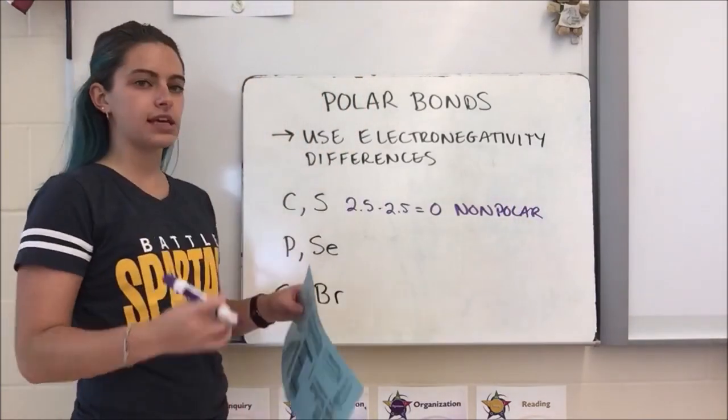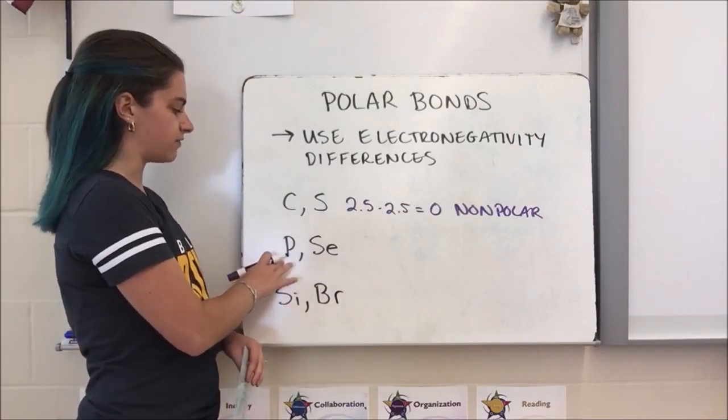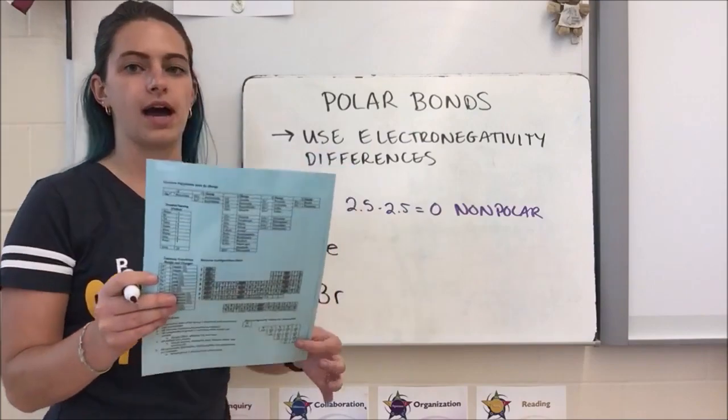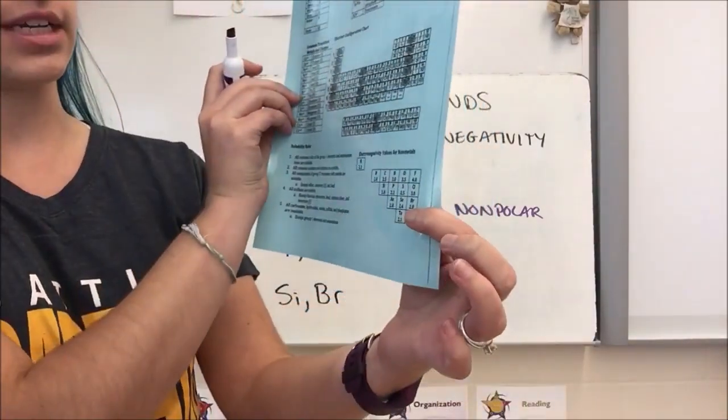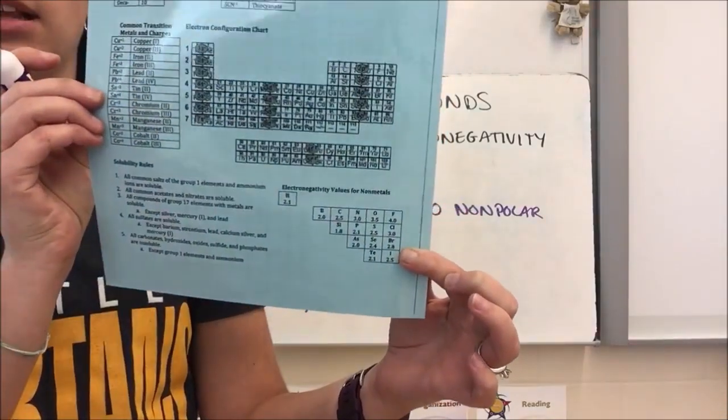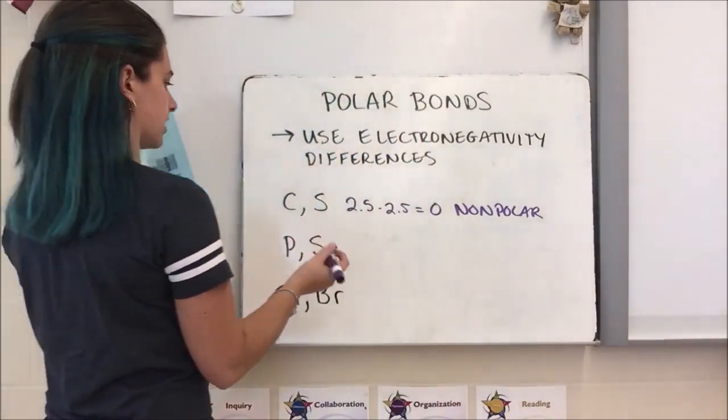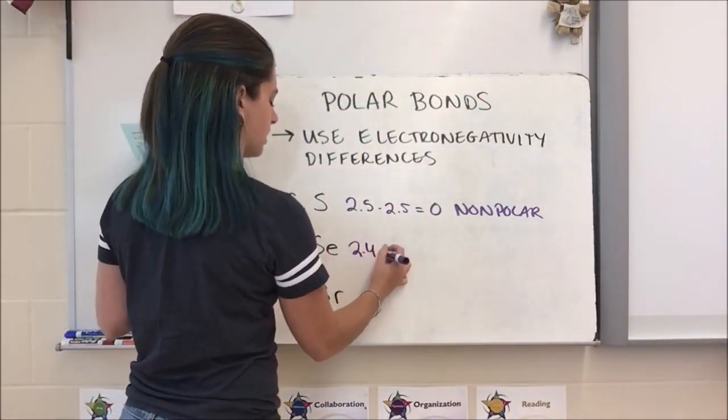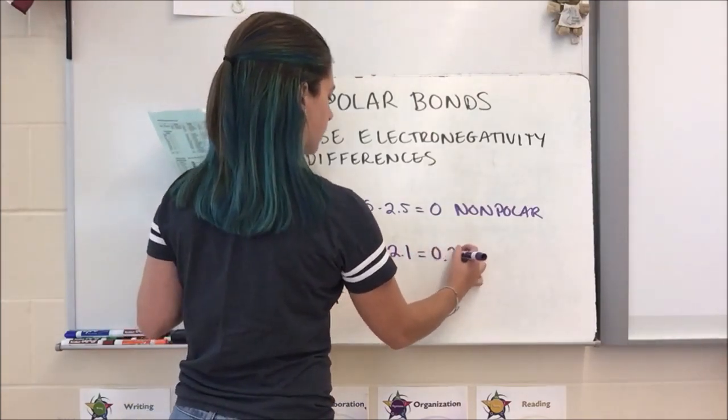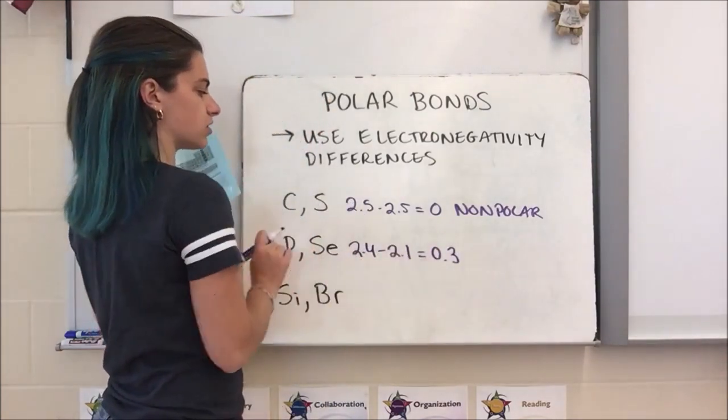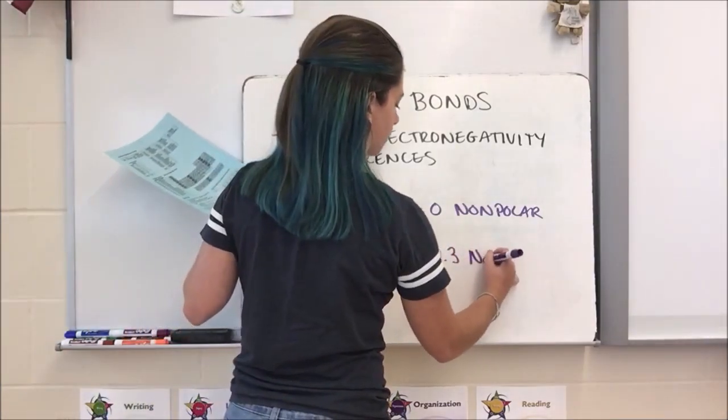My second example is phosphorus and selenium. Phosphorus has an electronegativity value of 2.1 and selenium has an electronegativity value of 2.4. So I'm going to do 2.4 minus 2.1 and that gets me 0.3 for my difference. This is also less than 0.5, so this is also a nonpolar bond.